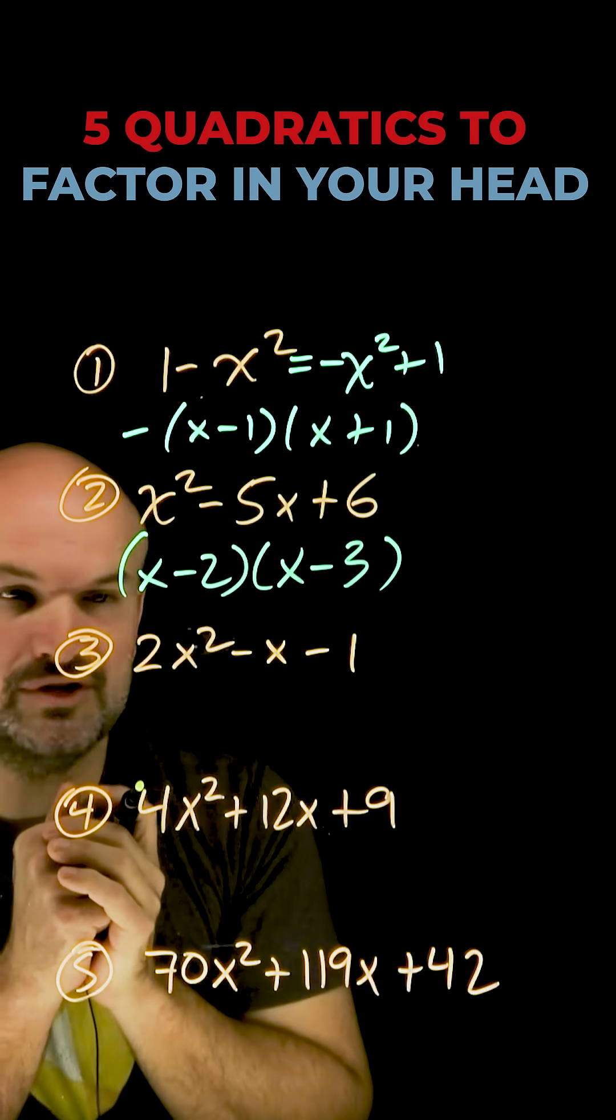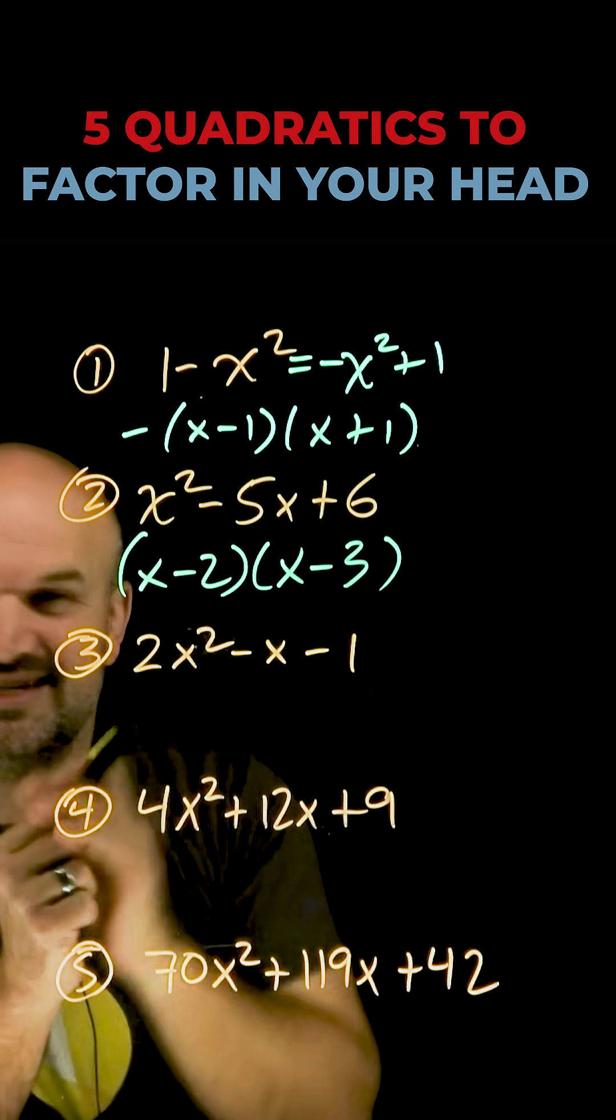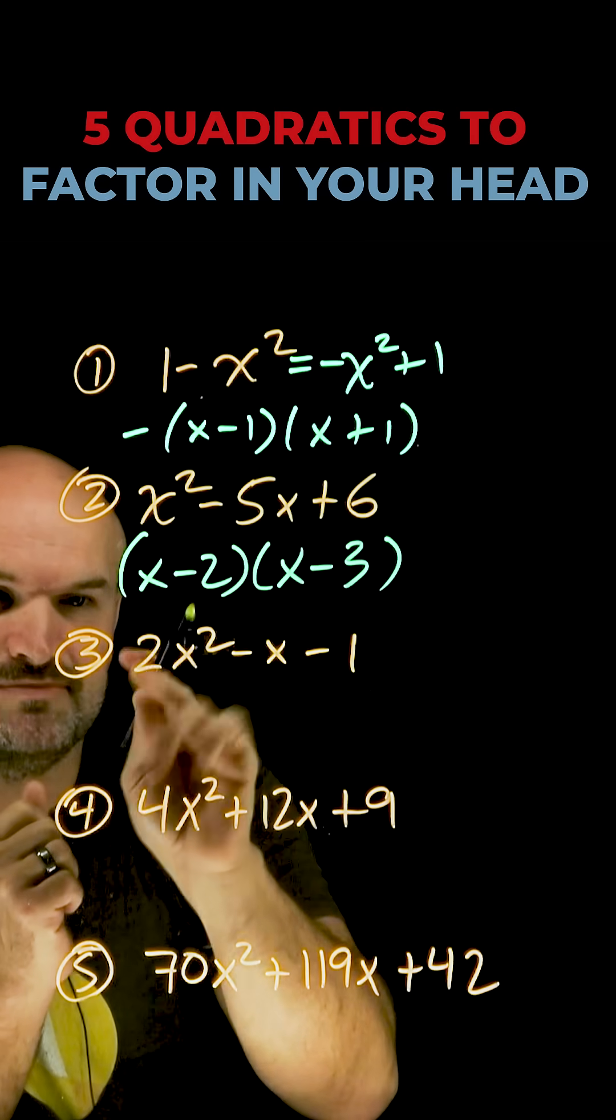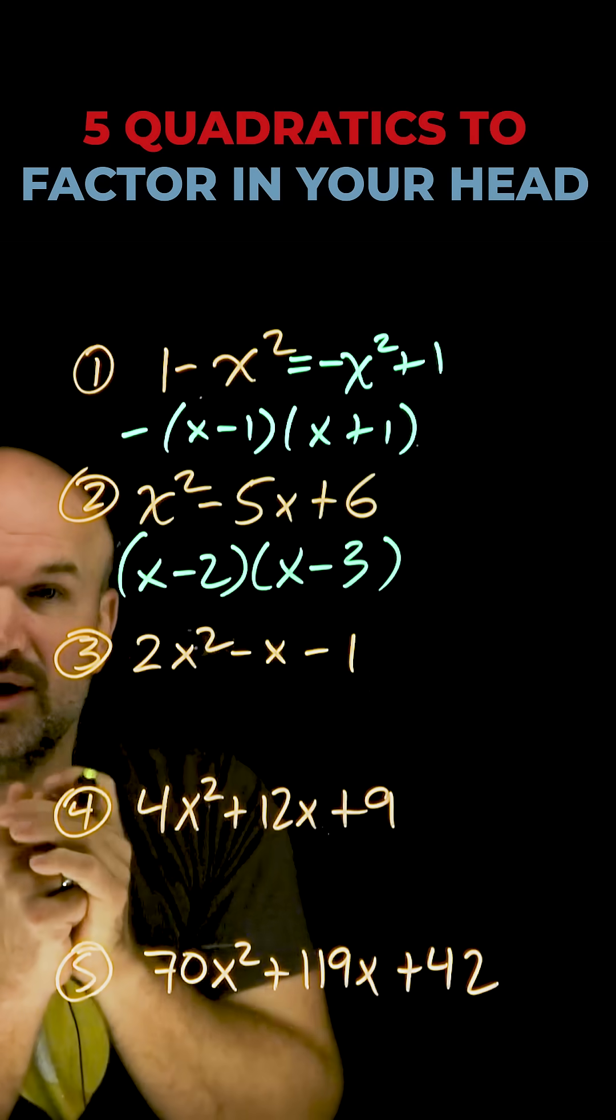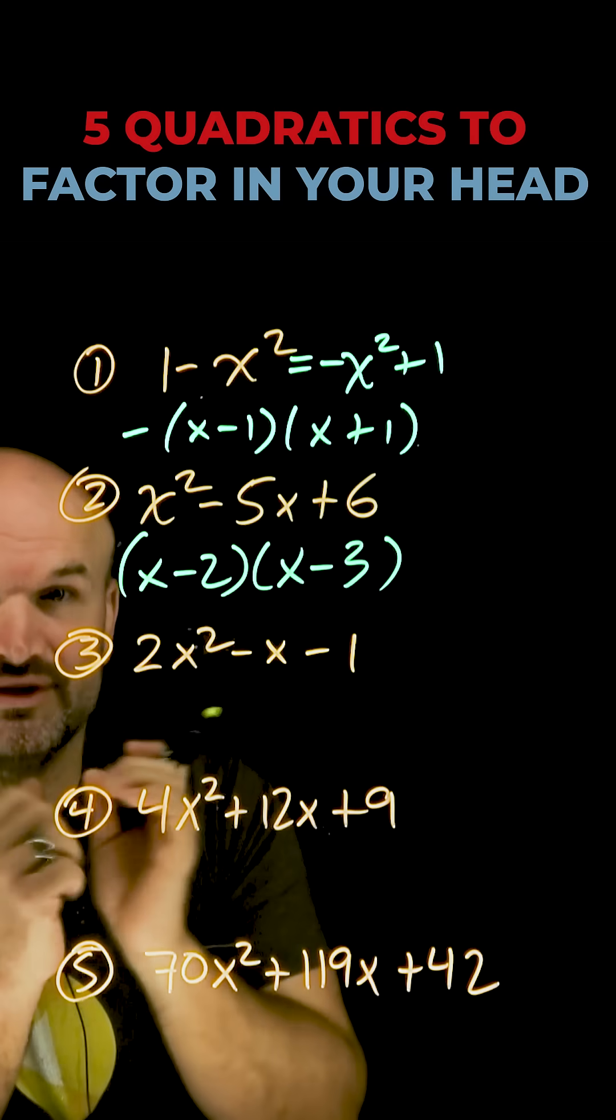Now this next one, a lot of times students will not want to do in their head because they see a two and they know there's many different options here. But the cool thing is when you have a two as your a and a one as your c, there's actually going to be only one option.